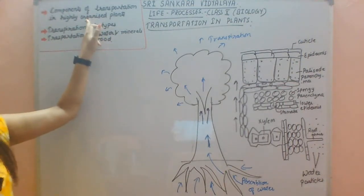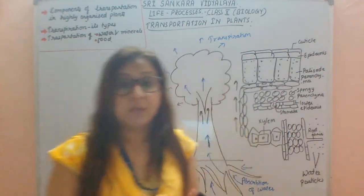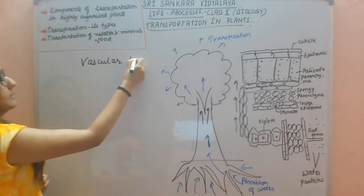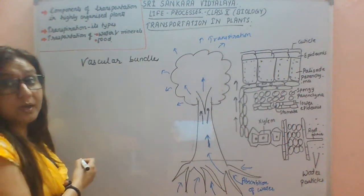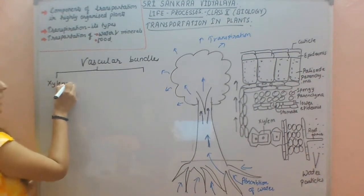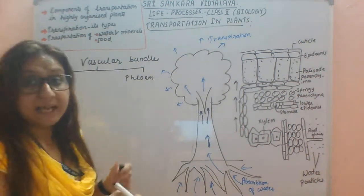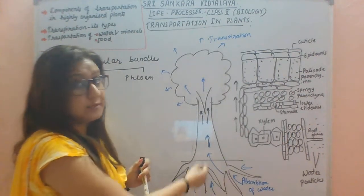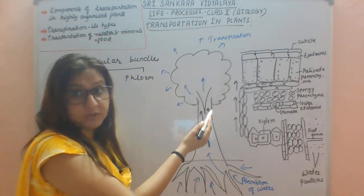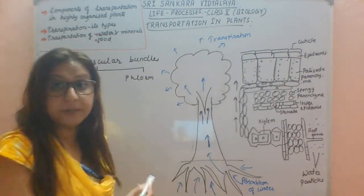Now we will study the components of transportation in highly organized plants. It comprises of the vascular bundles. As you all know, vascular bundles comprise of xylem and phloem. Xylem transports water and nutrients to different parts of the plant, whereas phloem helps in translocation — that is, the transportation of food to the different parts of the plant's body.